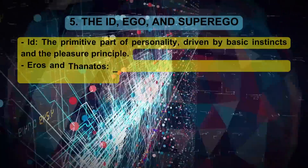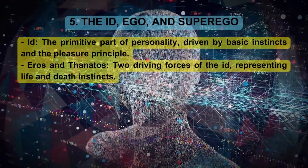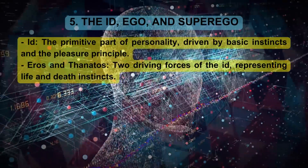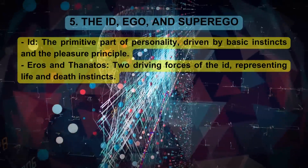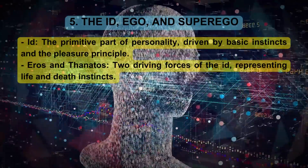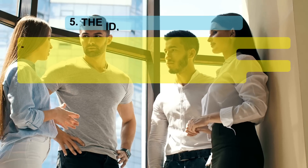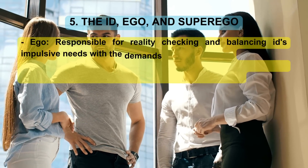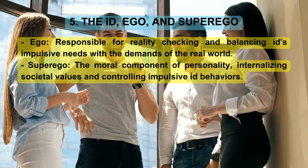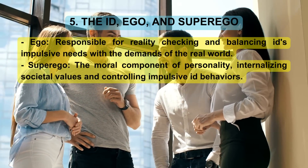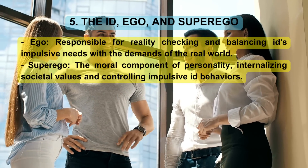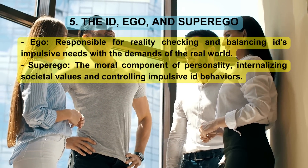The id, ego, and superego. The id is the primitive part of personality, driven by basic instincts and the pleasure principle. Eros and Thanatos are the two driving forces of the id, representing life and death instincts. The ego is responsible for reality-checking and balancing the id's impulsive needs with the demands of the real world. The superego is the moral component of personality, internalizing societal values and controlling impulsive id behaviors.